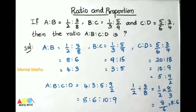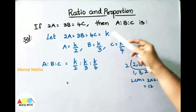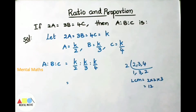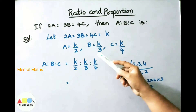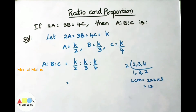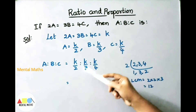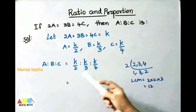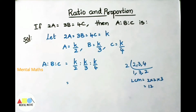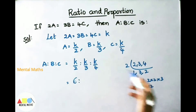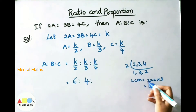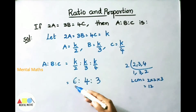If 2A equals 3B equals 4C, then A is to B is to C is how much? Let 2A equals 3B equals 4C equals K. Then A equals K/2, B equals K/3, and C equals K/4. So A is to B is to C is K/2 is to K/3 is to K/4. The LCM of 2, 3, 4 is 12. Multiplying all three terms by 12/K cancels K, giving numerators 6, 4, and 3. Therefore A is to B is to C is 6 is to 4 is to 3.